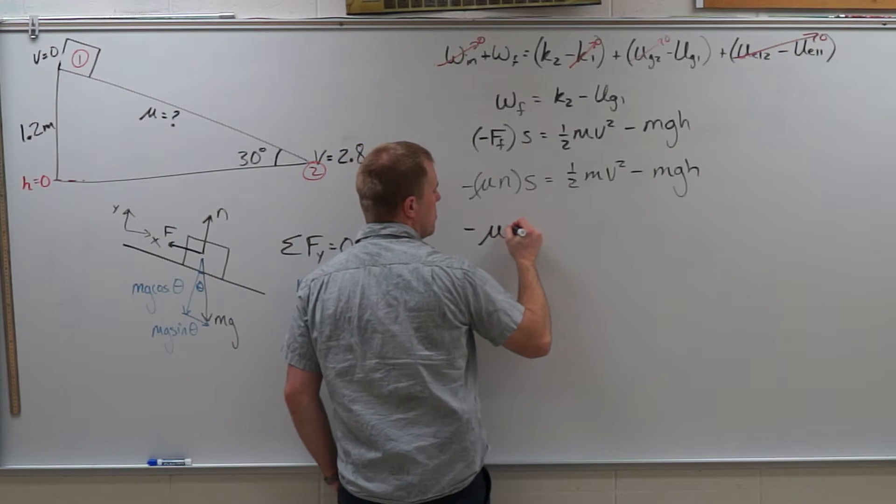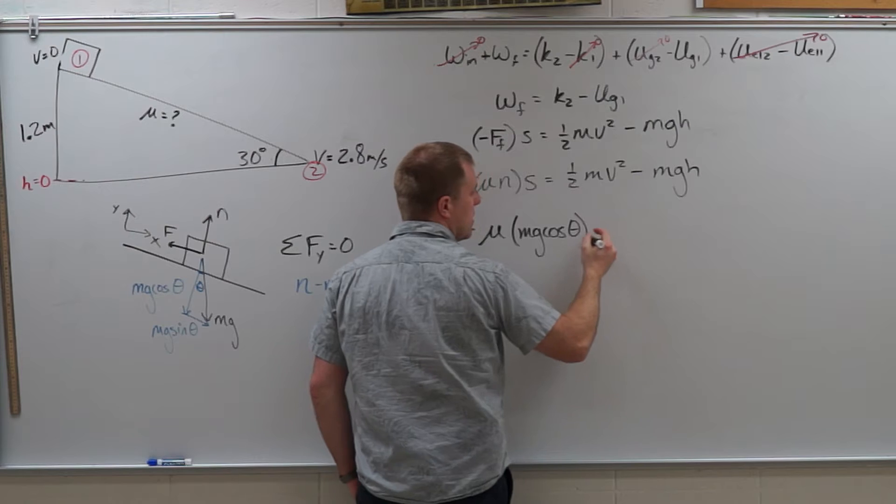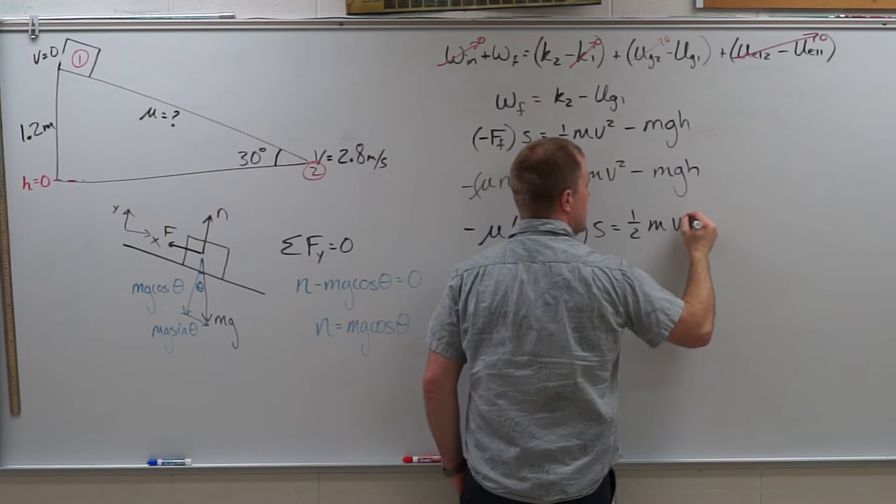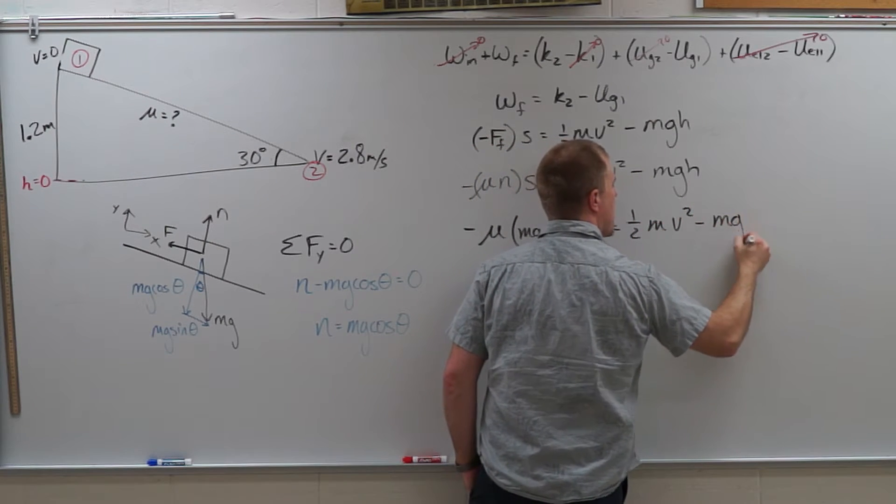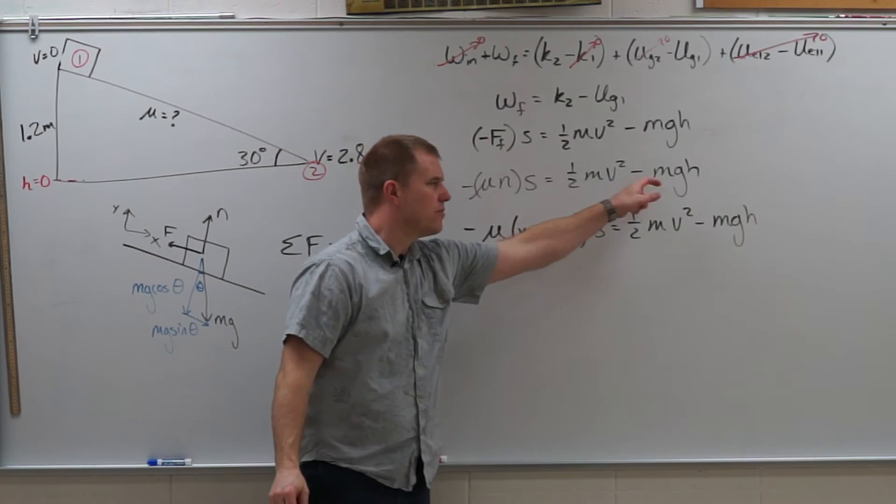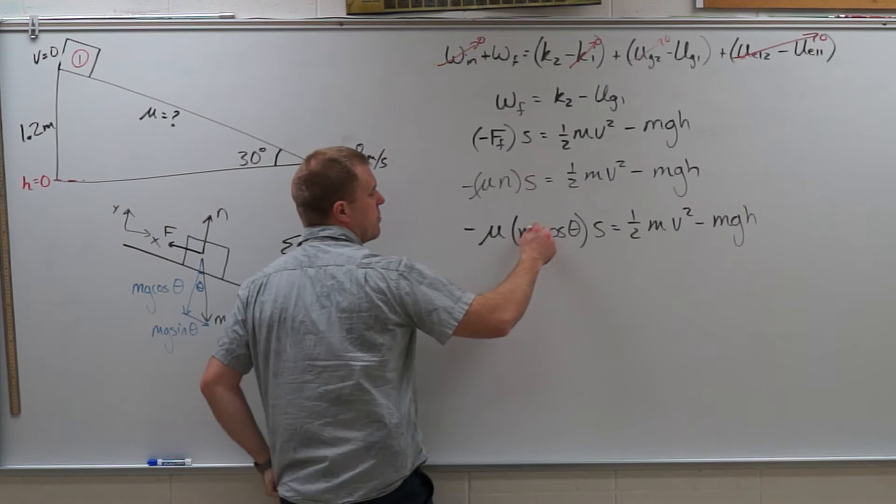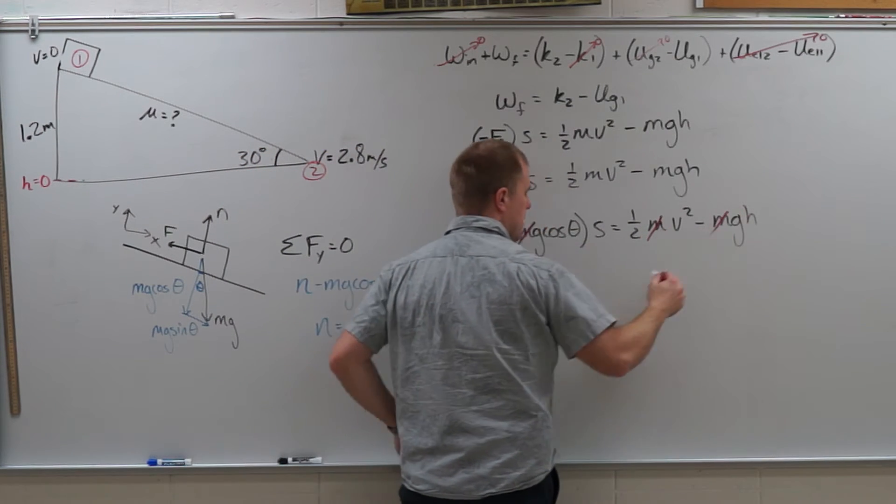So I have negative mu times mg cosine of theta times s is equal to one half mv squared minus mgh. And so if you're wondering how am I going to get those masses over there because I don't know them, if we continue on we see that we do end up with a mass in every term that we can get rid of.